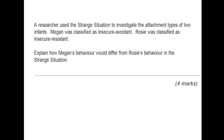A researcher used a strange situation to investigate the attachment types of two infants. Megan was classified as insecure avoidant and Rosie was classified as insecure resistant. Explain how Megan's behaviour would differ from Rosie's behaviour. It's an application question, so you need to talk about Megan and Rosie specifically. Megan, insecure avoidant, will ignore her caregiver upon reunion and have a high exploration rate. Whereas Rosie would seek and reject her caregiver and have a low willingness to explore compared to Megan.